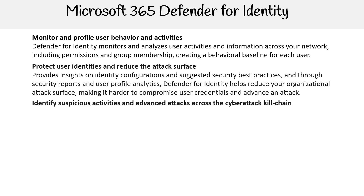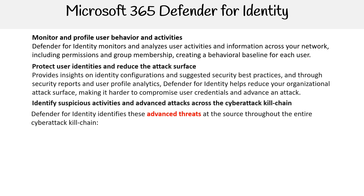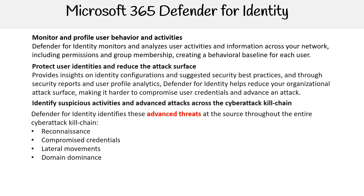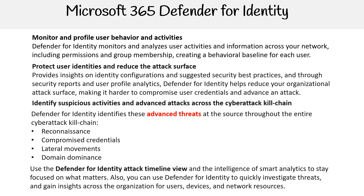For identifying suspicious activities and advanced attacks across the cyber attack kill chain, Defender for Identity identifies these advanced threats at the source throughout the entire kill chain — reconnaissance, compromised credentials, lateral movements, and domain dominance. You can use the Defender for Identity attack timeline view and the intelligence of smart analytics to stay focused on what matters.